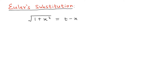You can also use the plus sign in this problem, but using the minus sign makes it much easier to get the answer. You can try the plus sign as a practice problem — you may need a few extra steps to get the answer. After applying the substitution, you can solve for t, which is simply t equals x plus the square root of 1 plus x squared.